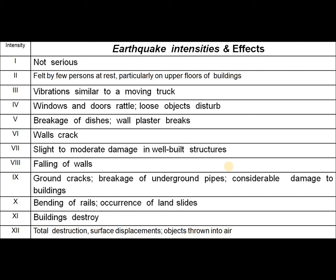Intensity 6 is when severe wall cracks are noticed. Intensity 7 indicates slight to moderate damage of a structure. Intensity 8 is the falling of walls. Intensity 9 is when the ground has many cracks, breakage of underground pipes, and considerable damage to buildings. If rails are bent or landslides occur, that is also intensity 9. Intensity 11 indicates destruction of buildings, while intensity 12 — the highest — means total destruction of structures, surface displacement, or objects thrown into the air.